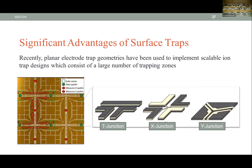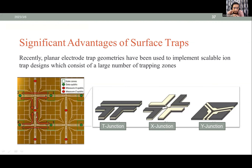Scalability is the main challenge — hundreds of qubits are not sufficient; we need thousands. The main potential of surface trap designs is that they can trap thousands of ions and shuttle them between regions. Ion traps can have X-junctions, T-junctions, and Y-junctions through which ions can be transported. All these junction types have been experimentally demonstrated.